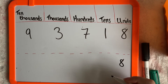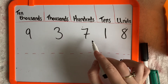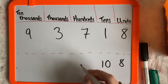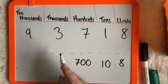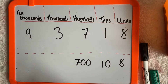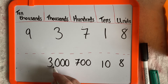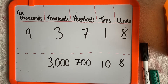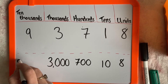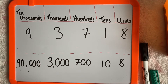When the eight is in the units column, it's worth eight. When the one is in the tens column, we have one lot of ten, so it's worth 10. When the seven is in the hundreds column, we've got seven hundreds, so 700. When the three is in the thousands column, we've got 3,000. And when the nine is in the ten thousands column, that means we've got nine lots of 10,000, so it's 90,000. All together, that would be 93,718.